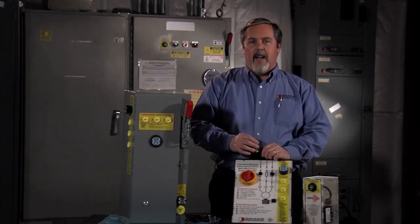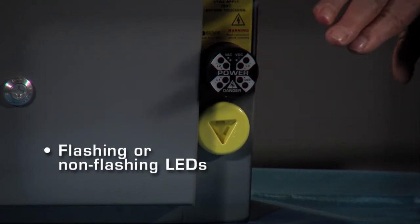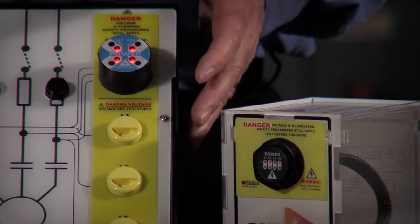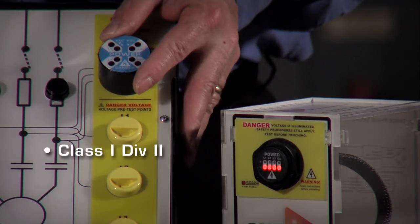Let's talk about some of those features now. So some of those features are a flashing version or a non-flashing version. And here's another version, the Class 1 Div 2, which allows for usage in that type of environment.